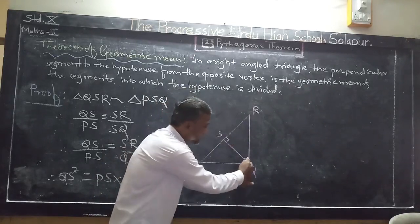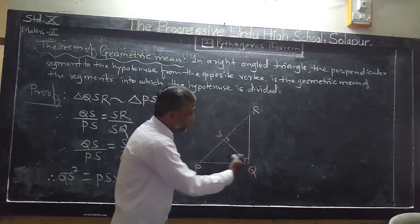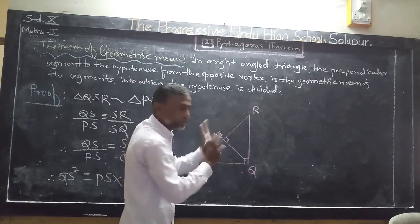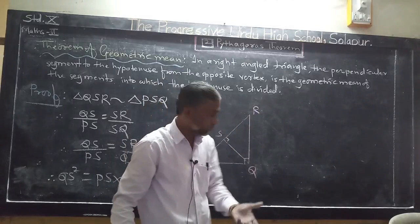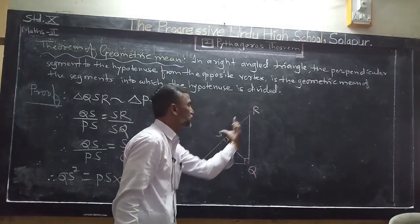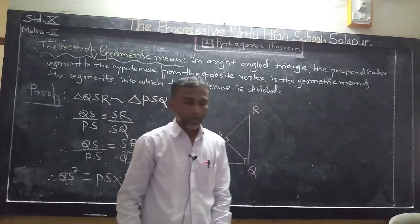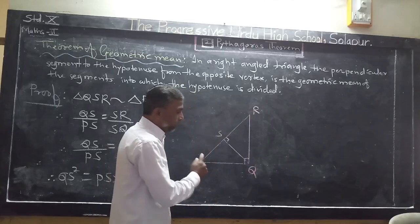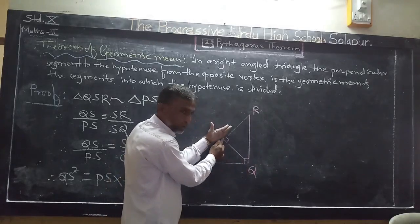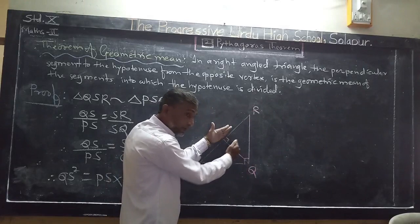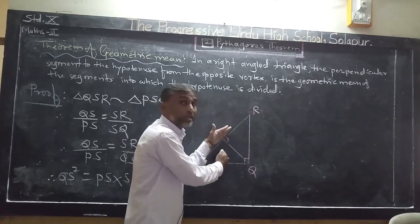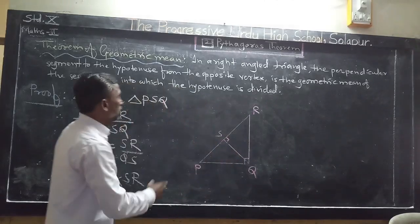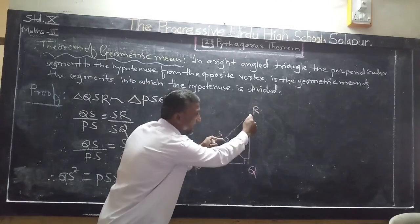What is given: triangle PQR is a right-angled triangle in which angle Q is 90 degrees, and segment QS is perpendicular to hypotenuse PR. We have to prove: QS² = PS × SR. For the proof, we use the similarity in right-angled triangles — if a perpendicular segment is drawn to the hypotenuse, the right-angled triangle is divided into two right-angled triangles which are similar to each other.